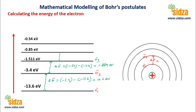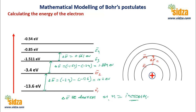Between the third and fourth shell, delta E = negative 0.85 plus 1.511 = 0.661 electron volts. We can see that as you move away from the nucleus, the energy gap keeps on decreasing. The maximum difference is between the first and second shells at 10.2 eV, and the gap becomes smaller with increasing n.